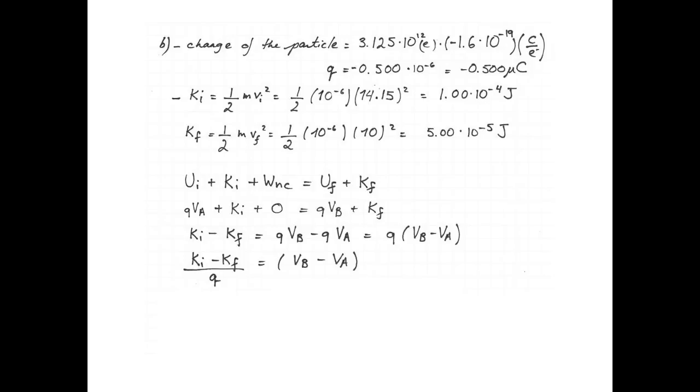VB minus VA is the difference between the initial and the final kinetic energy divided by the charge. So 1 times 10 to the negative 4 joules minus 5 times 10 to the negative 5 joules. The whole thing divided by 1.5 microcoulombs, negative of course, gives us minus 100 volts between points B and point A.